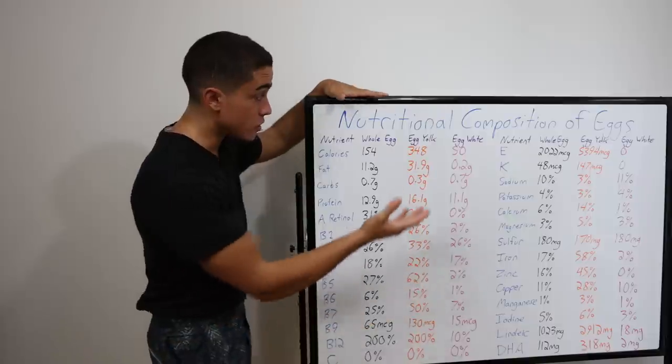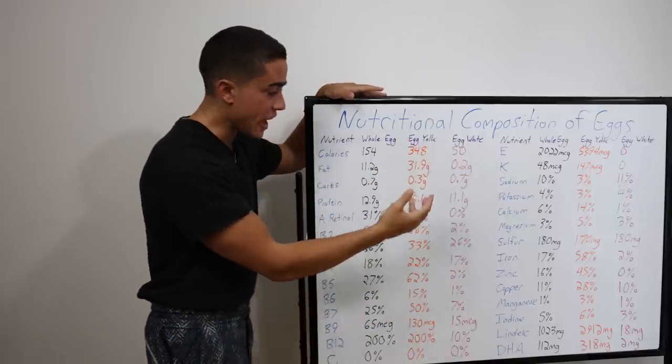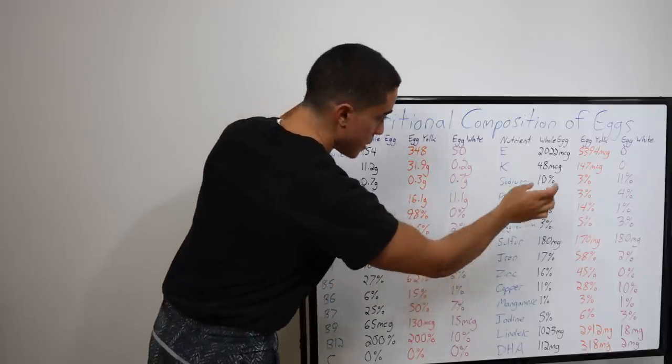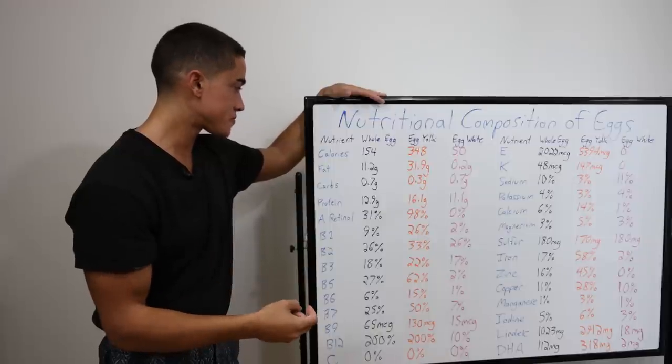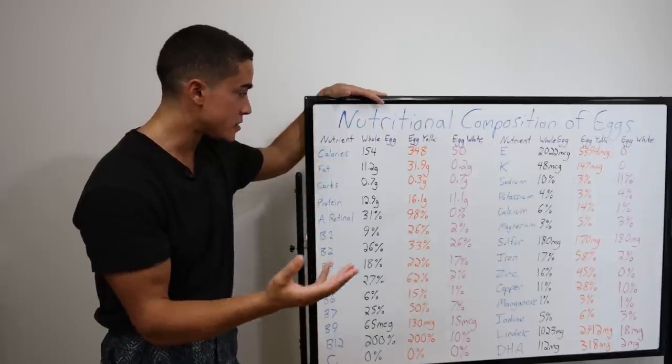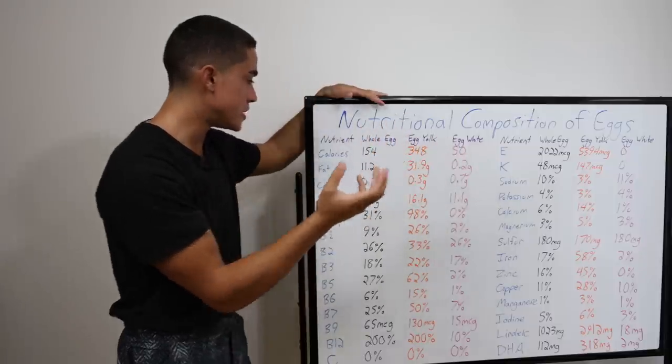We did not equal out the nutrient percentage versus calories. So obviously, like for egg yolk, egg white is one seventh of the calories. So if you multiply these numbers by seven, when comparing them to egg yolk, it does look a lot better.